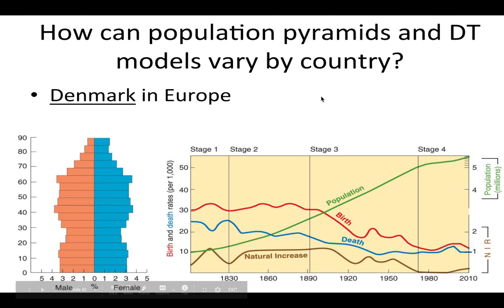Denmark's population pyramid shows the base narrowing, indicating a decrease in CBR and approaching ZPG. Looking at the middle ages of 30 to 60, the bars are slightly wider than the base, suggesting a possibly negative NIR with fewer births. People are also living longer in Denmark, making this a Stage 4 or possibly Stage 5 country.